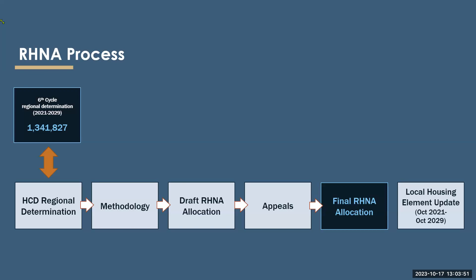Here is an overview of the RHNA process. It starts with a determination provided by HCD. SCAG then develops methodology, and a draft allocation plan is created. Once the draft allocation plan is created, jurisdictions can appeal their draft RHNA numbers. Once the appeal process has been completed, the final RHNA allocation is finalized, and then local jurisdictions have to update their housing elements to indicate where they could accommodate future housing.